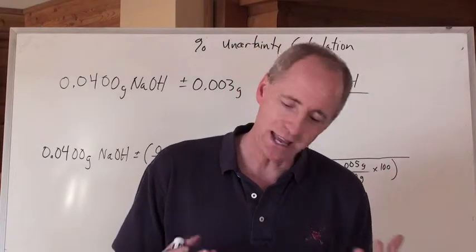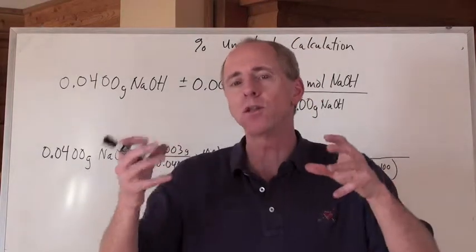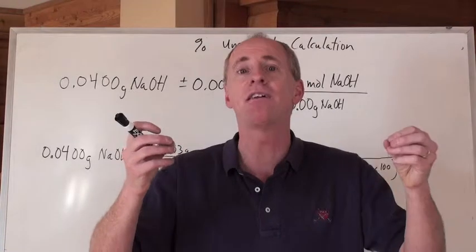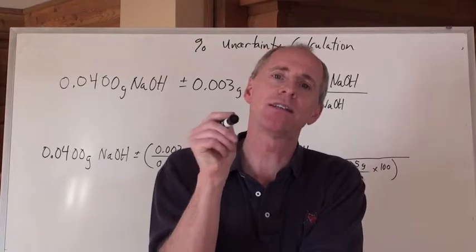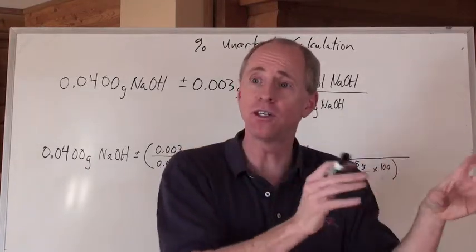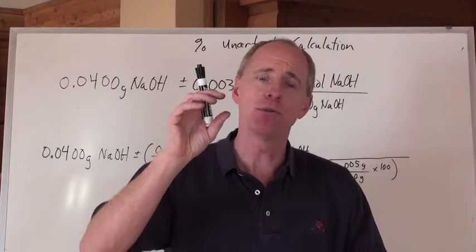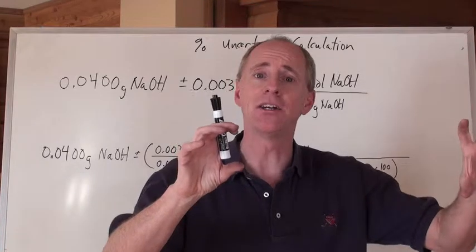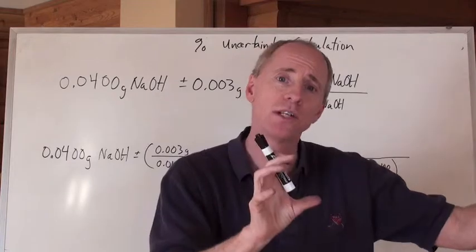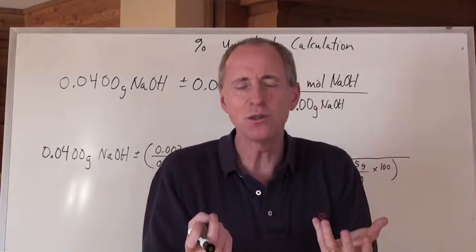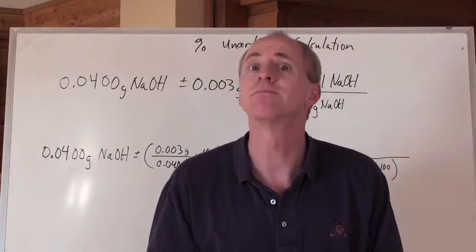But when you multiply and divide, you can't do that. When you multiply and divide, sometimes you're multiplying and dividing by things that have different units. And if they have different units, you can't really add absolute uncertainties because it doesn't make any sense. Like, if you're multiplying milliliters by moles per liter, well, those two things have different types of units for their absolute uncertainties. So, what are you going to do? Well, how about turning everything into a percent uncertainty and then you can just add the percents together.